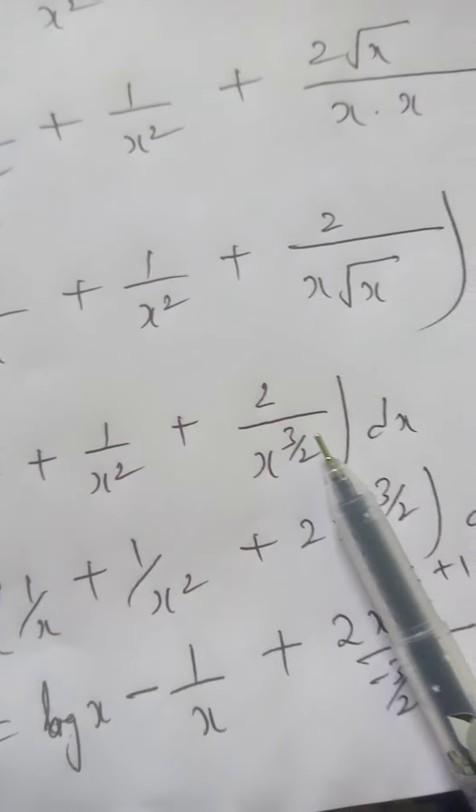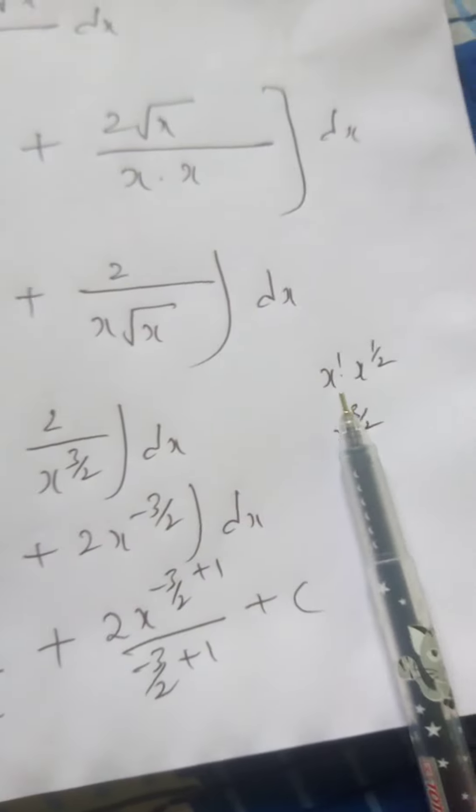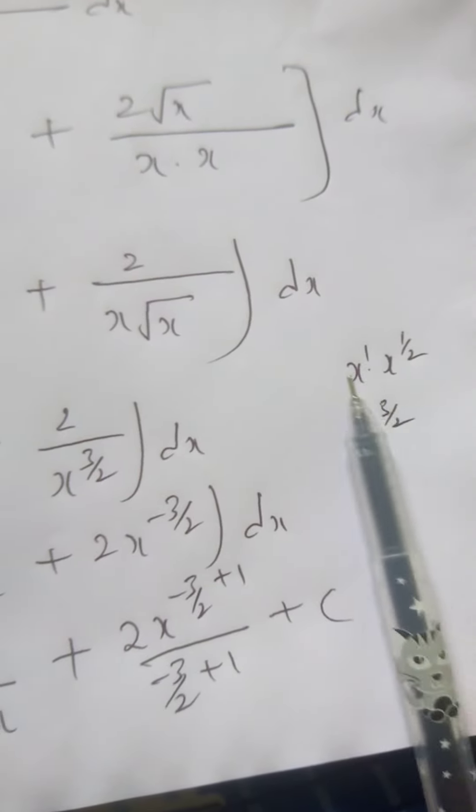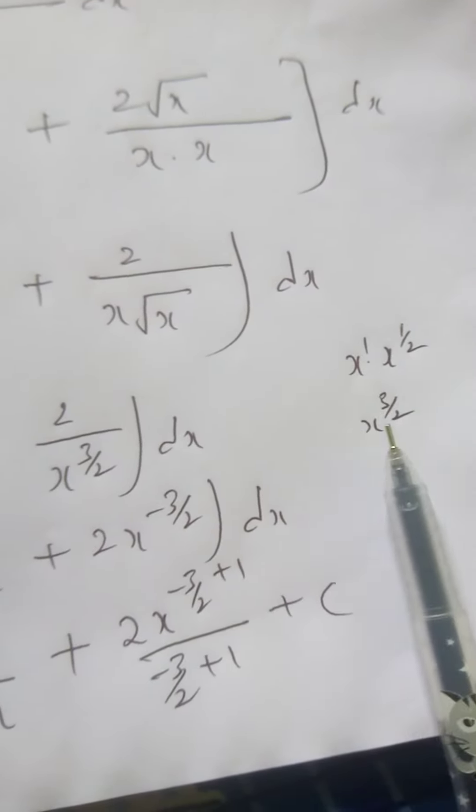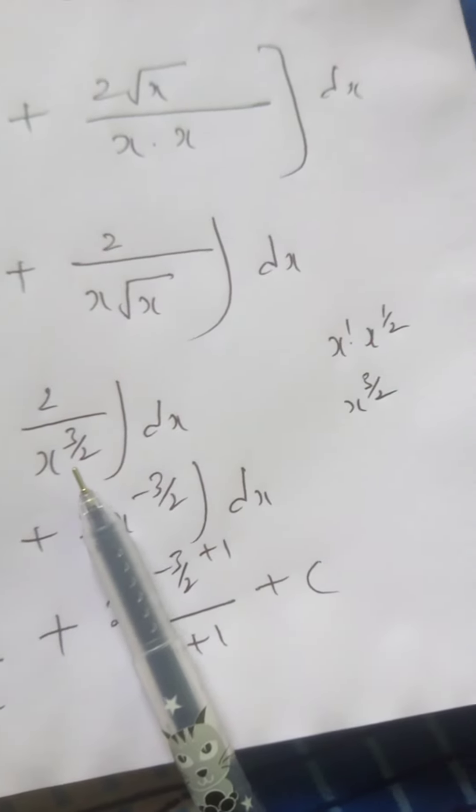So it is 1 by x plus 1 by x square plus 2 by x to the 3 by 2. How? I have written here. See, x power 1 into x power 1 by 2. I can write this root x as. Then it will be, if bases are the same, powers are added. So it will become x power 3 by 2. So here I have written x power 3 by 2.